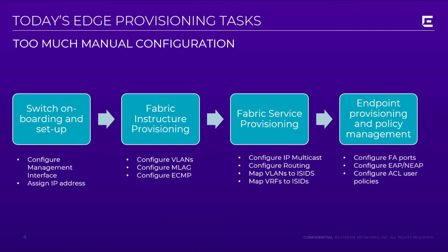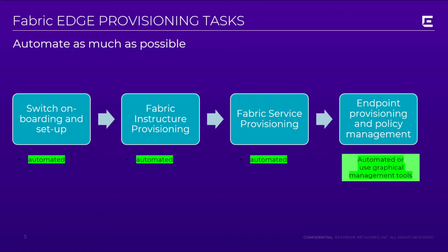We here at Extreme feel that there's still too much manual configuration that has to happen. And even though many of our customers tell us that once they've installed Fabric Connect, after moving from traditional networking models, they've realized up to a 60% OPEX benefit, we still feel that there are far too many manual configuration steps that need to occur at the switch and network element level. As you will recall, in our first video in our series, we demonstrated how we would automate many of these steps, such as the switch onboarding and setup, the fabric infrastructure provisioning, as well as the fabric service provisioning, and to some degree, the endpoint provisioning and policy management.